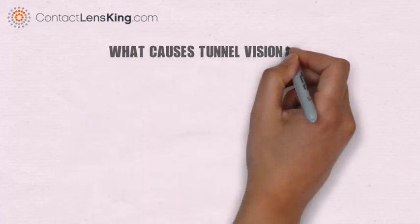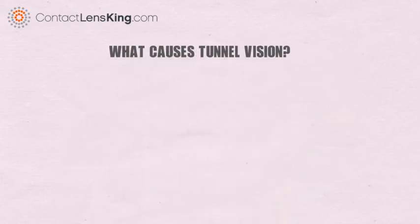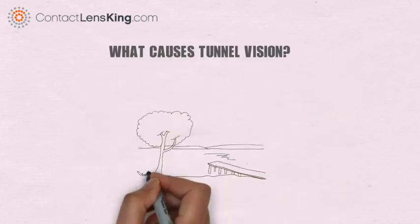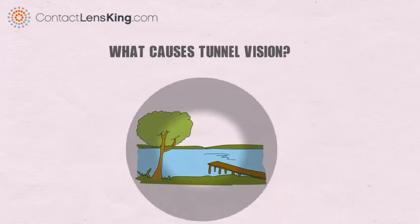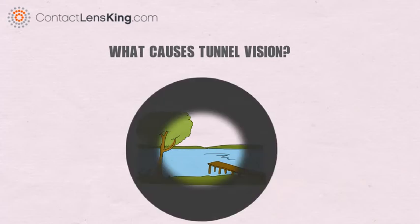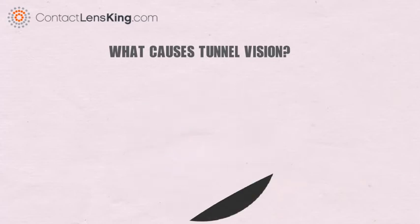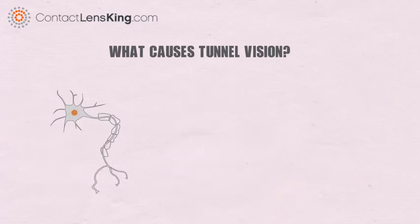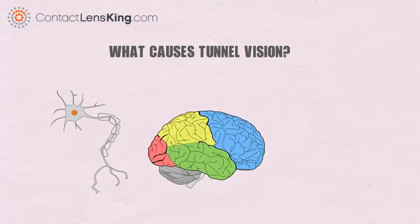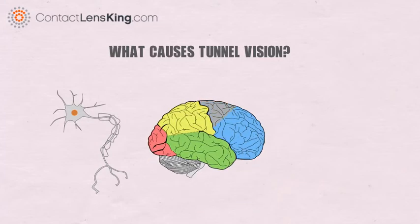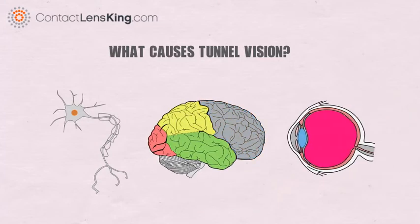What causes tunnel vision? Tunnel vision is the loss of peripheral vision, which can be caused by multiple underlying factors that result in neurological damage, brain damage, or retina or optic nerve damage.